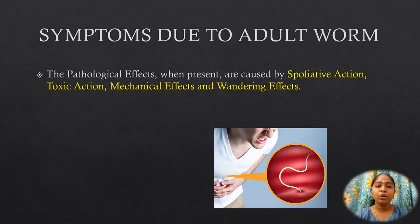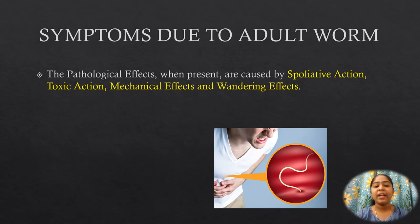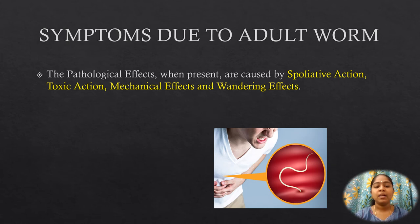Symptoms due to the adult worm. Clinical manifestations due to adult worm vary from asymptomatic infection to severe or even fatal consequences. Asymptomatic infections are generally seen in mild cases. The pathological effects, when present, are caused by the spoliative action, the toxic action, and the mechanical and wandering effects of the adult worm.